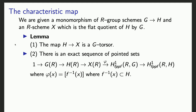And secondly, we have an important sequence of pointed sets. This H¹ is a pointed set, marked by the trivial G-torsor. The important thing in that sequence is a map phi, called the characteristic map, which is very simple to use: given a point x in X(A), you pull back the torsor along this point, and it gives you the fiber F⁻¹(x) inside H. That sequence is really fundamental.